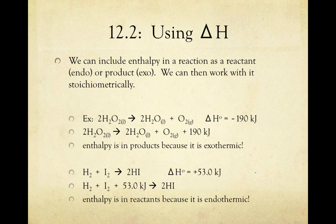Looking at this reaction, on the other hand, we see that when one mole of H2 and one mole of I2 are combined to yield two moles of HI, the reaction absorbs 53 kilojoules. We know this because the sign on delta H is positive. Therefore, we can write it as a reactant: H2 plus I2 plus 53 kilojoules yields two moles of HI. In summary, when our delta H is negative, it becomes a product because the reaction is exothermic. When our delta H is positive, it becomes a reactant because our reaction is endothermic.